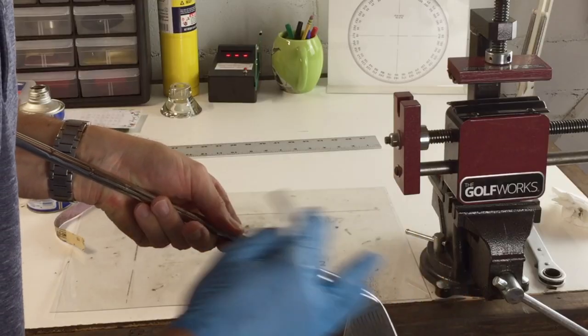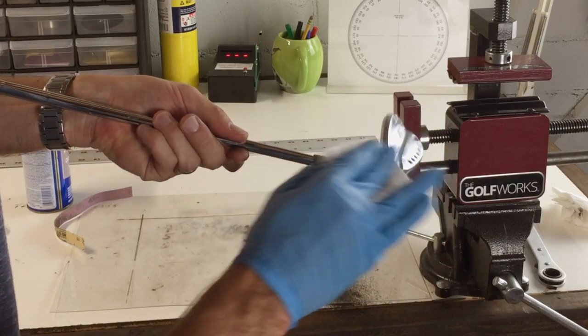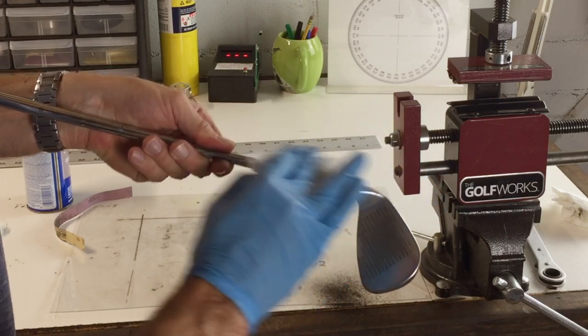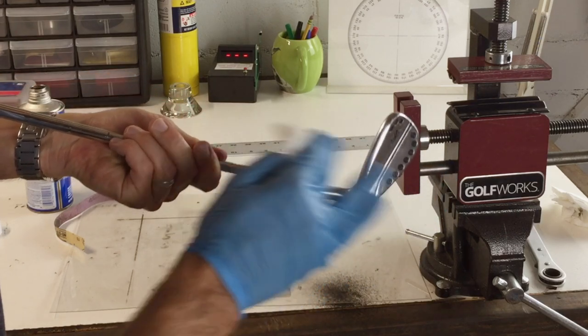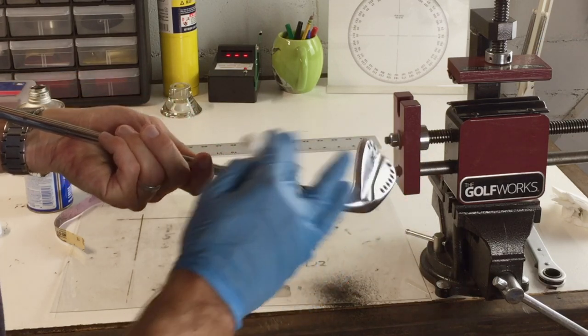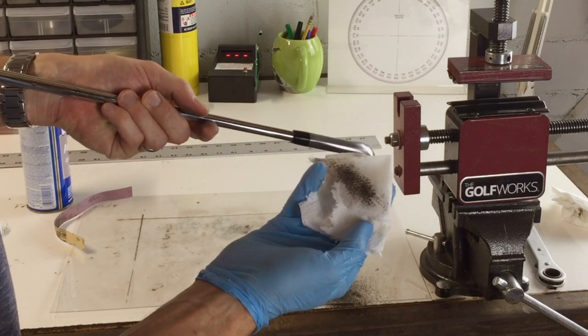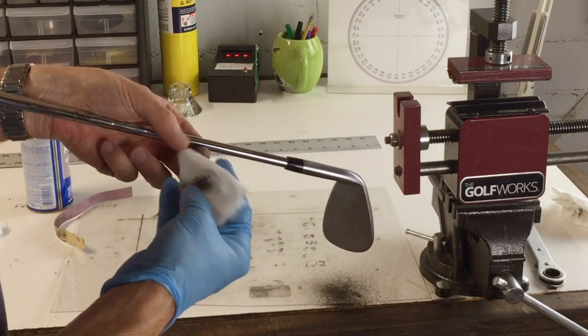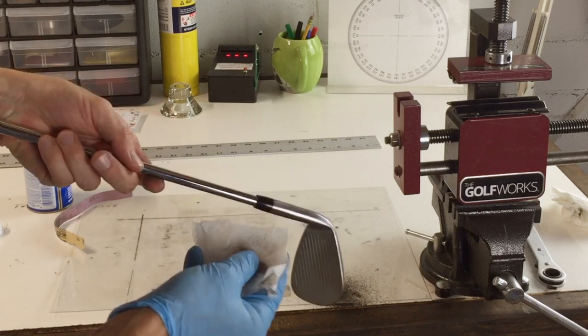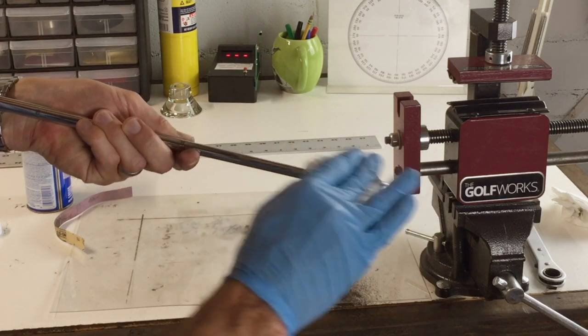And now we're just going to wipe in the opposite direction. Remember, we did our sanding going across the ferrule. So now we're going to go up and down the ferrule with the acetone. I'll go all the way around a couple times. You see all that material that takes off. I'm going to move to a slightly different part of the towel, a little cleaner part, and real gently go around one more time.